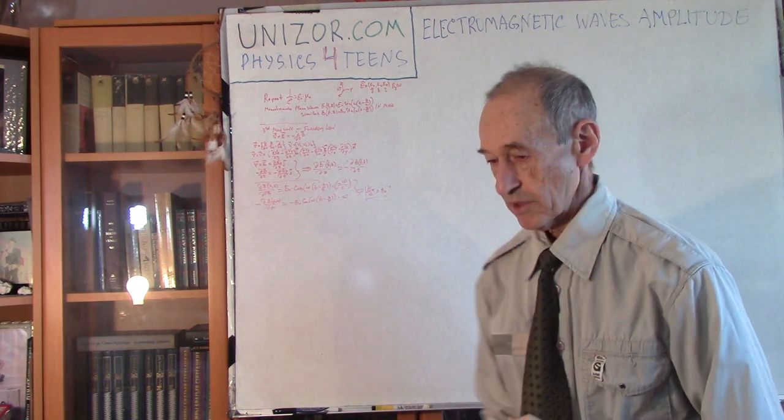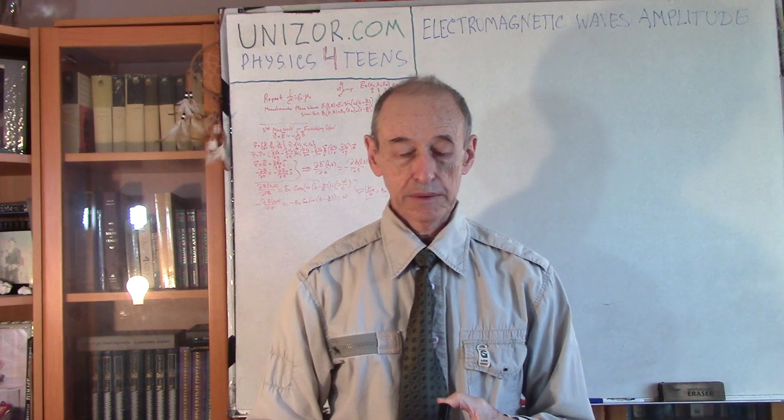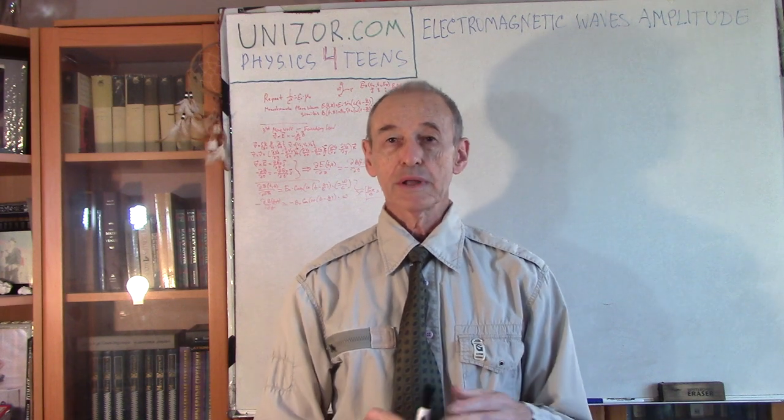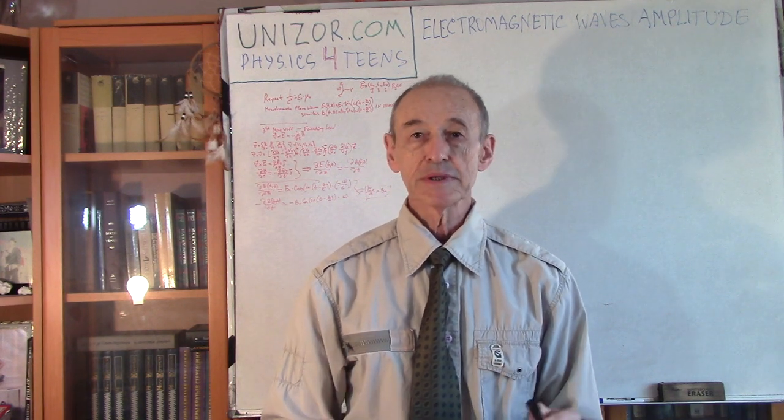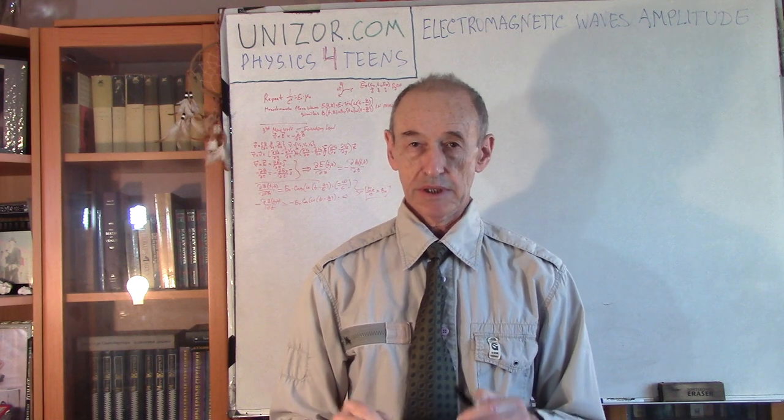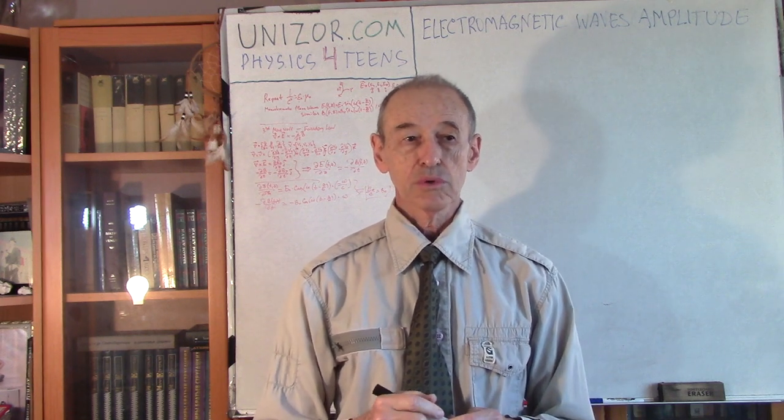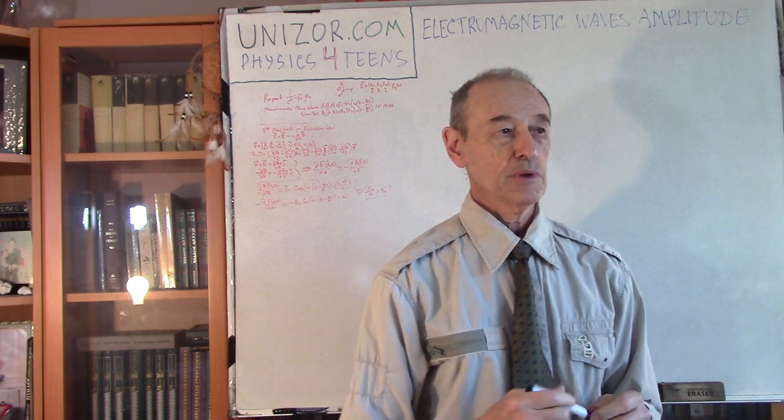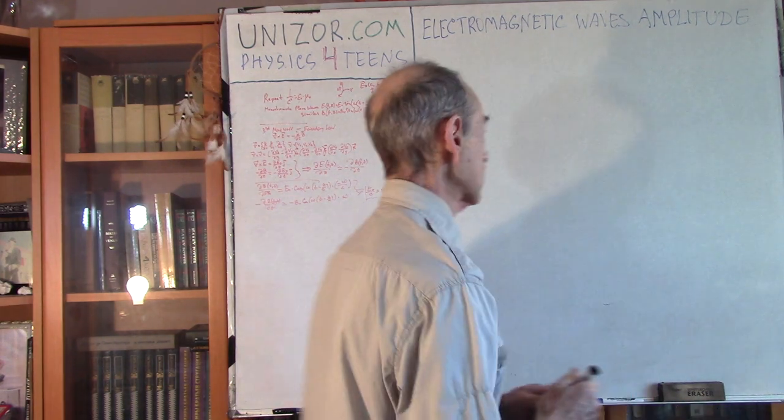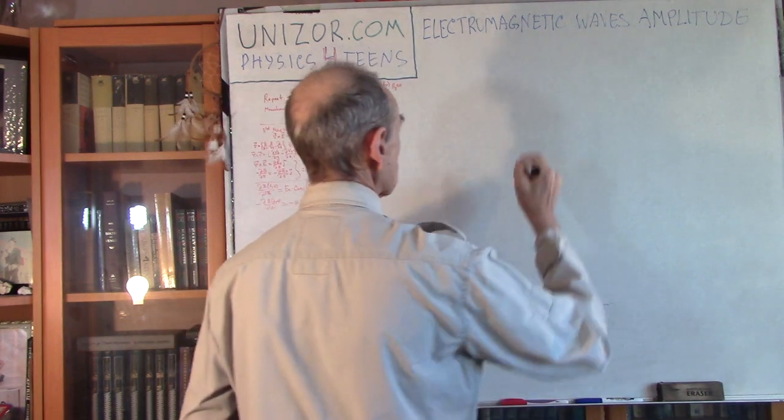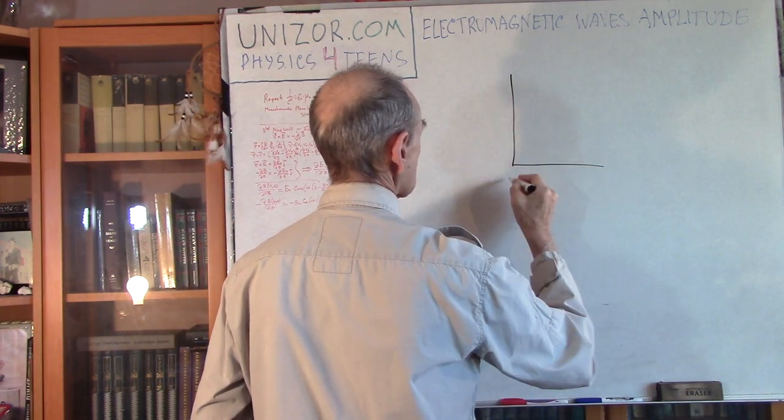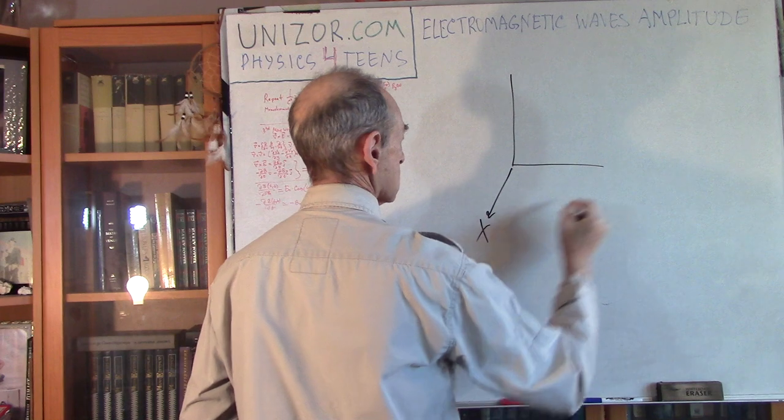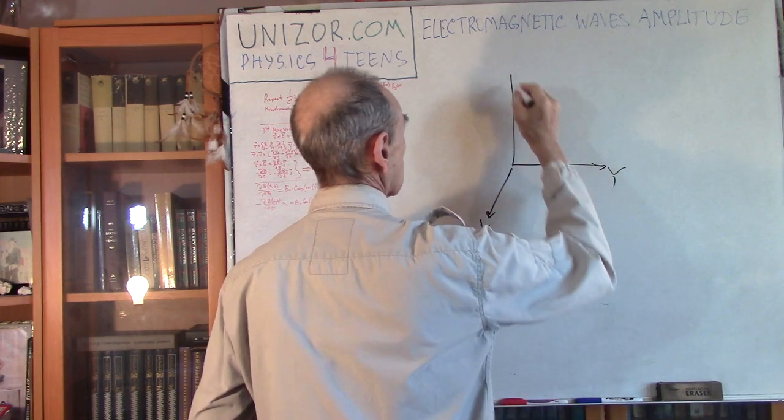Now back to business. We are talking right now about the simplest kind of electromagnetic field, so-called monochromatic flat waves or plane waves. Imagine a system of coordinates: this is x, this is y, this is z.